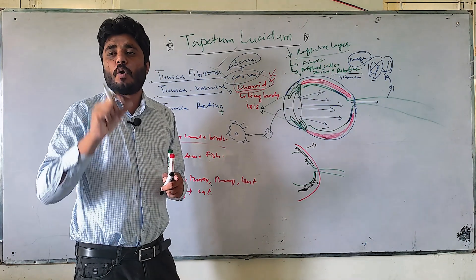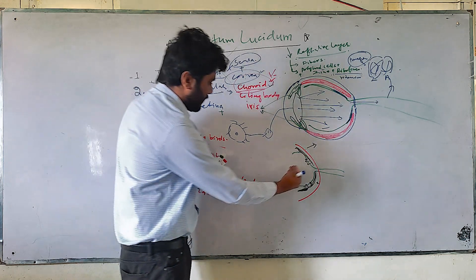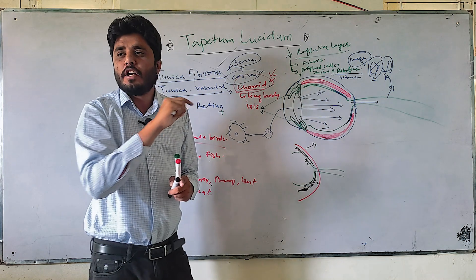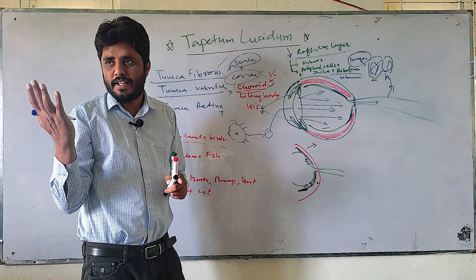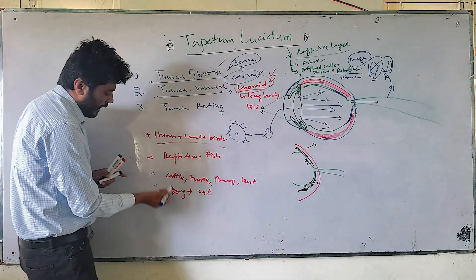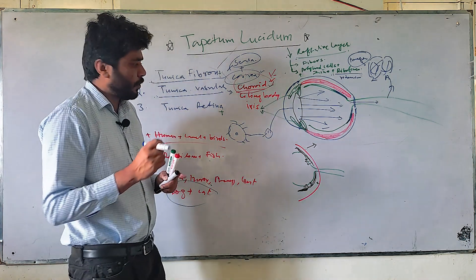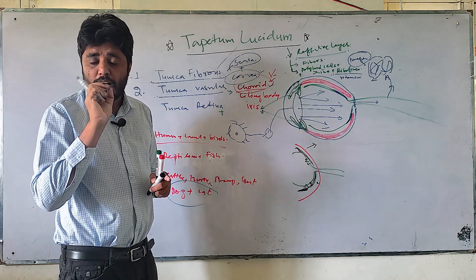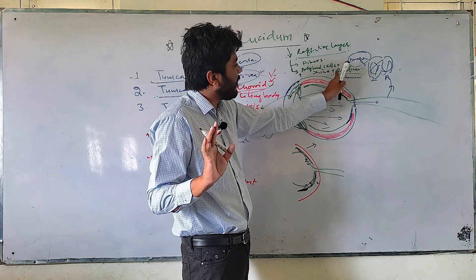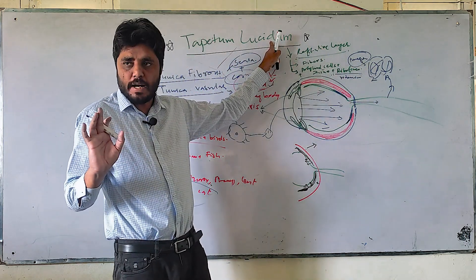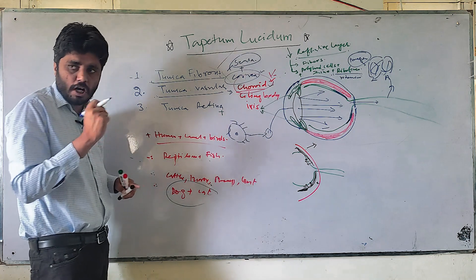Due to this reflection, and because of pigmentation chemicals like zinc and riboflavin — a vitamin — involved in this process, animal eyes shine in the night when this reflection occurs. This is due to the tapetum lucidum. Animal eyes shine in the night, and this shining color is different across species depending on the different chemicals present in the tapetum lucidum.